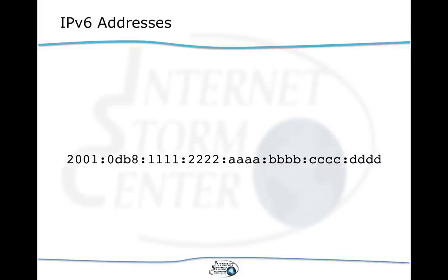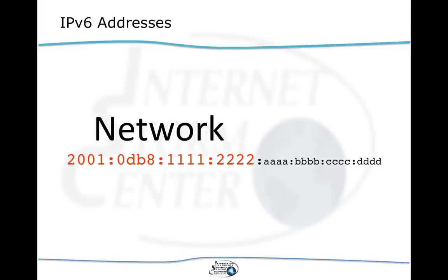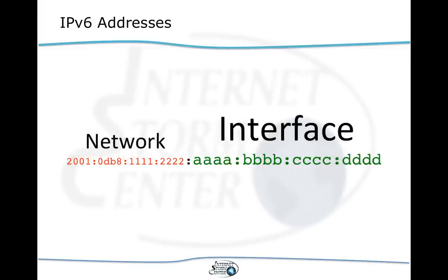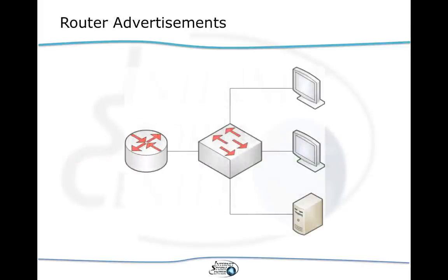IPv6 addresses span a total of 128 bits or 16 bytes. One important concept is that these addresses need to be understood in two parts. The first half is usually referred to as the network part — it identifies the network and is the only part needed to route the packet. The second half is referred to as the interface part, which identifies the system within the network. The interface ID has to be unique within the link layer network, which is why it is sometimes derived from the MAC address.